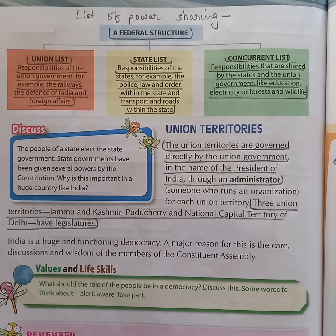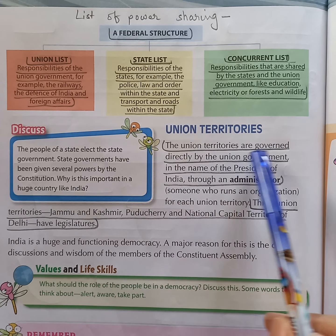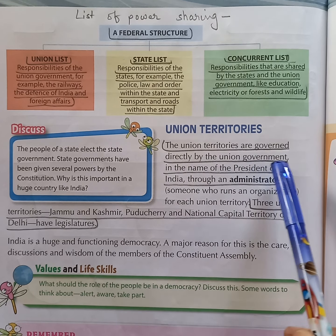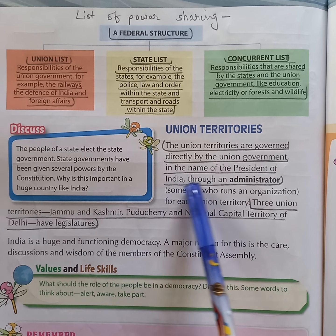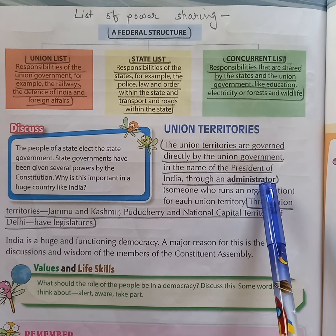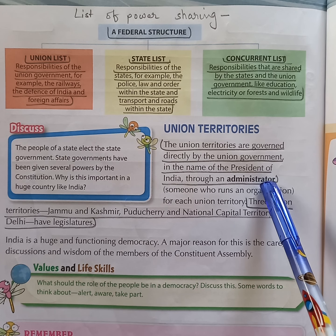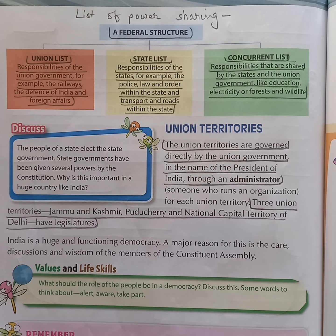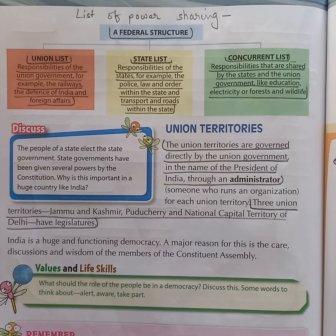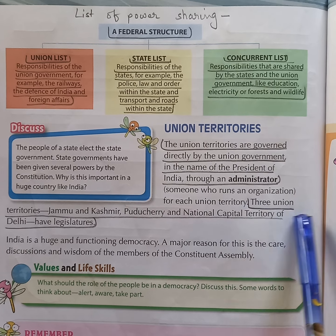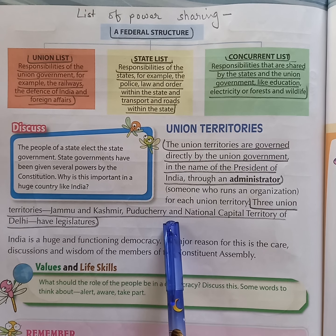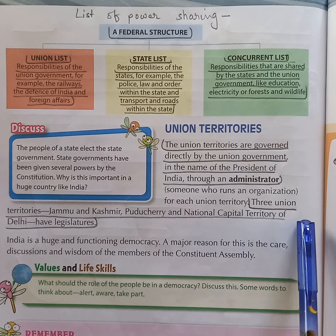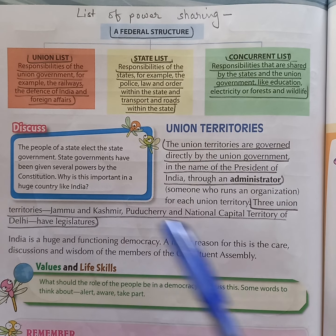Next question: how are Union Territories governed? Answer: the Union Territories are governed directly by the Union Government in the name of the President of India through an Administrator. Name three Union Territories which have their own Legislatures. Answer: three Union Territories — Jammu and Kashmir, Puducherry, and the National Capital Territory of Delhi — have Legislatures.